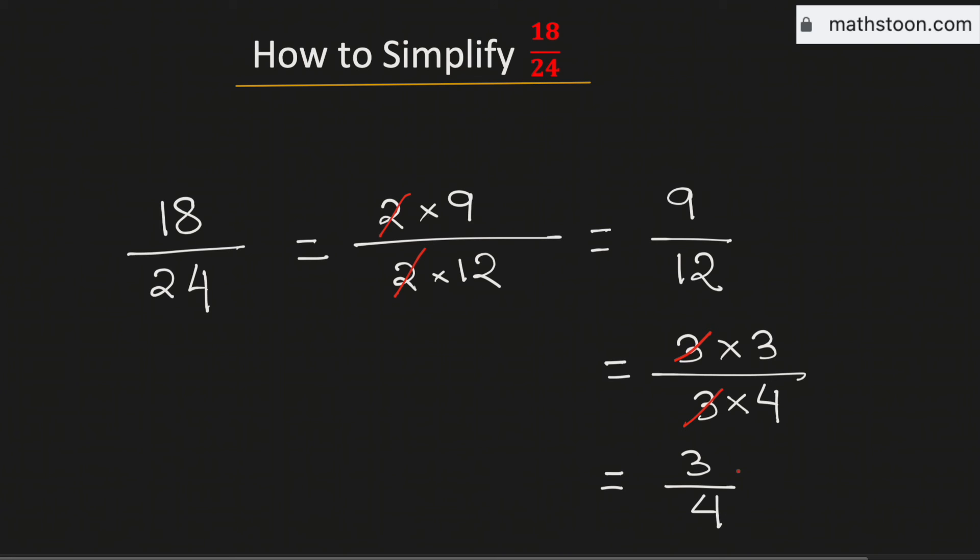As there is no number which can divide both 3 and 4, this is the simplified reduced form of the fraction 18 by 24. And this is our final answer. Thank you for watching.